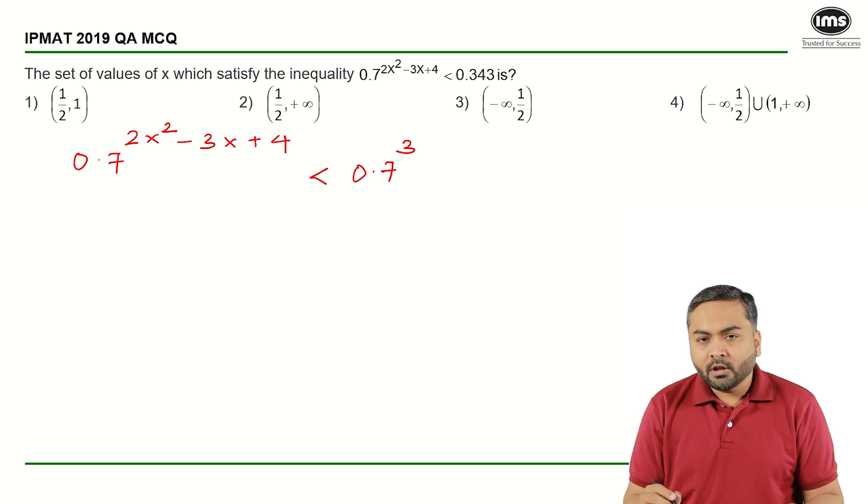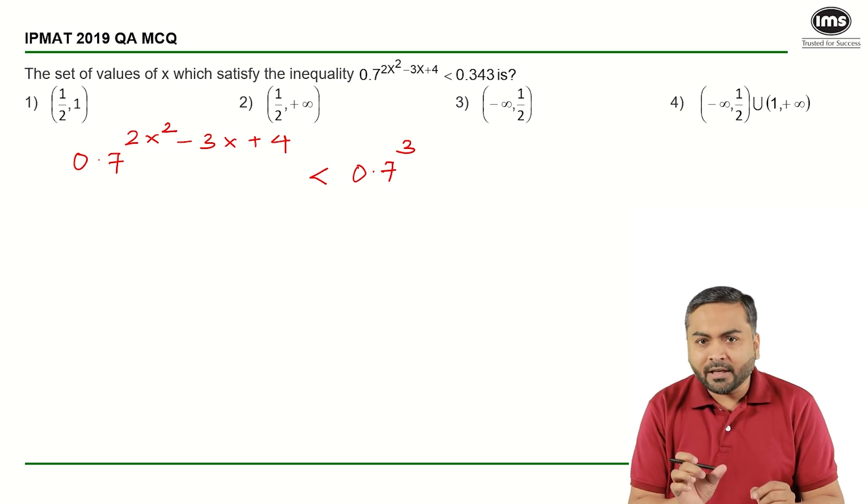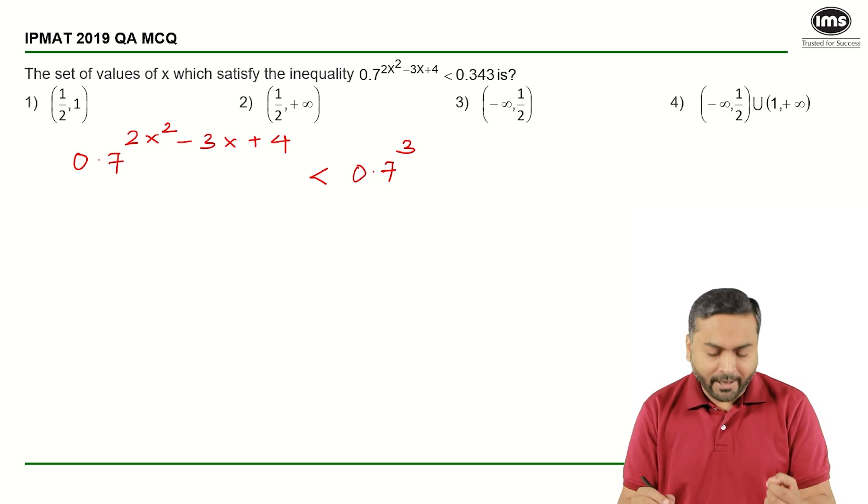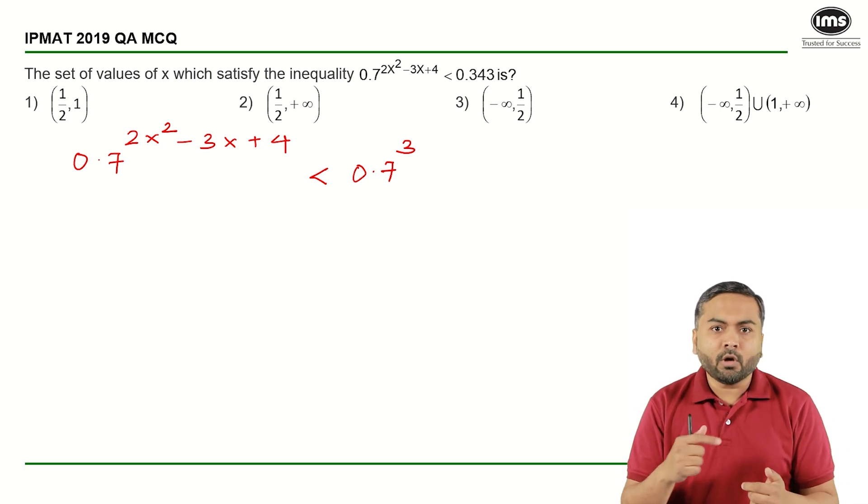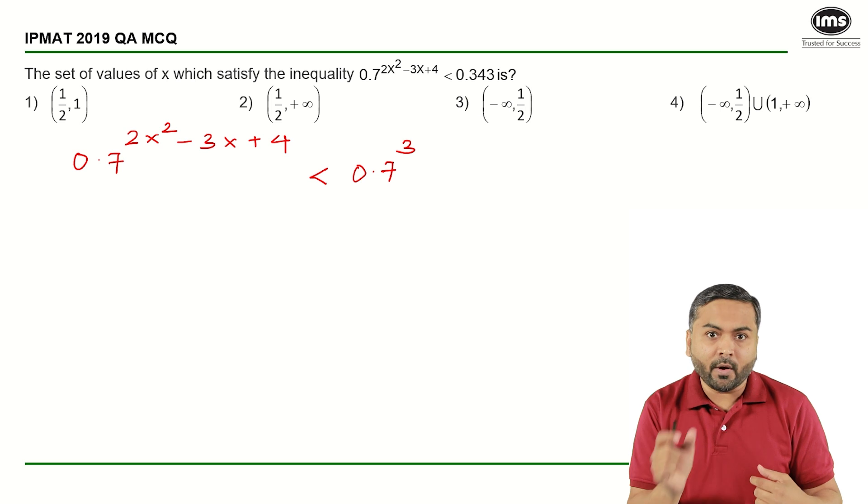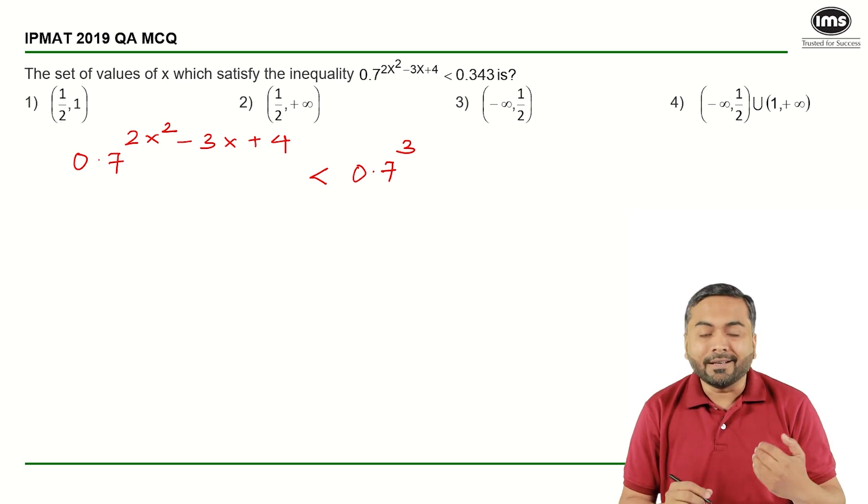Now, if you observe the base, that is 0.7, is less than 1. I am sure each one of us knows that when the base is less than 1, if I keep on increasing the power, if the base is between 0 and 1 and I keep on increasing the power, the value keeps on decreasing.